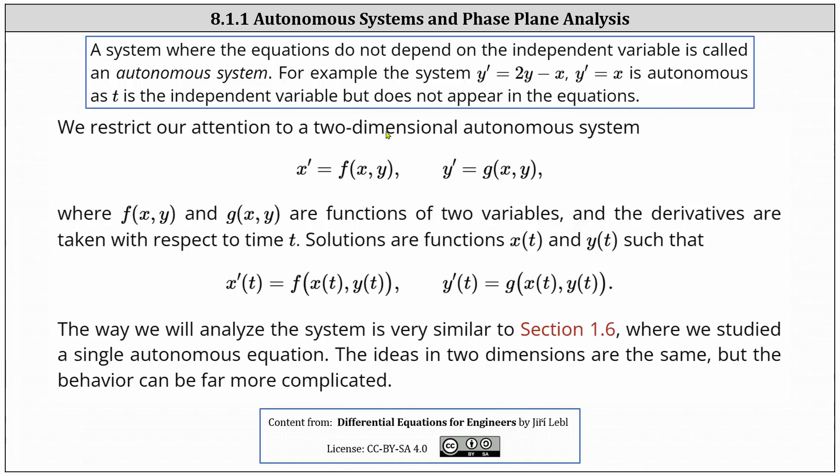In this lesson, we restrict our attention to a two-dimensional autonomous system in the form x' = f(x,y) and y' = g(x,y), where f and g are functions of two variables and the derivatives are taken with respect to time t. Solutions are functions x(t) and y(t) such that x'(t) = f(x(t), y(t)) and y'(t) = g(x(t), y(t)).